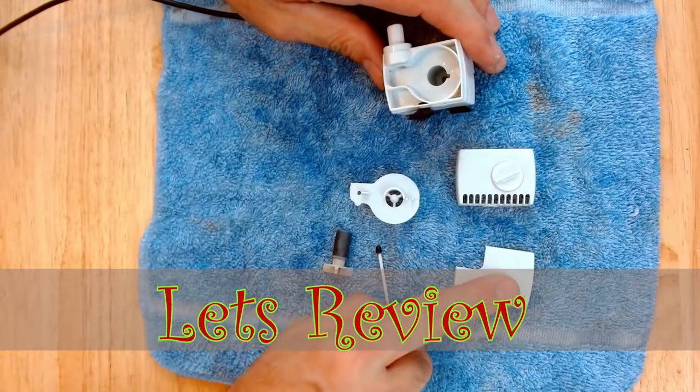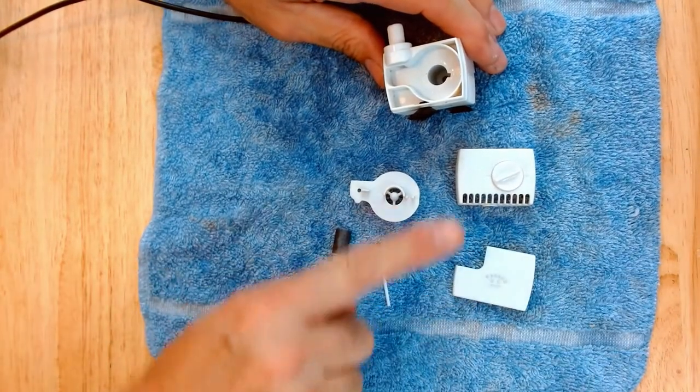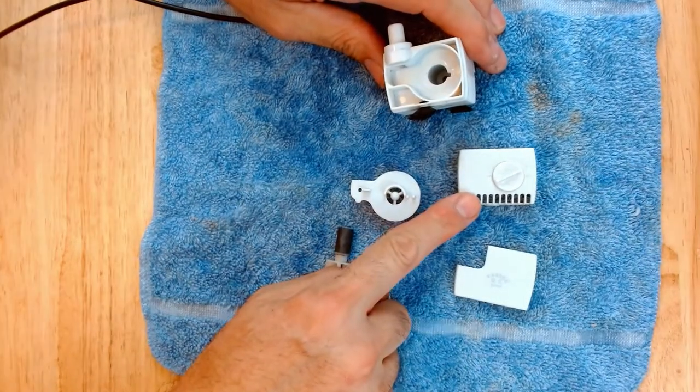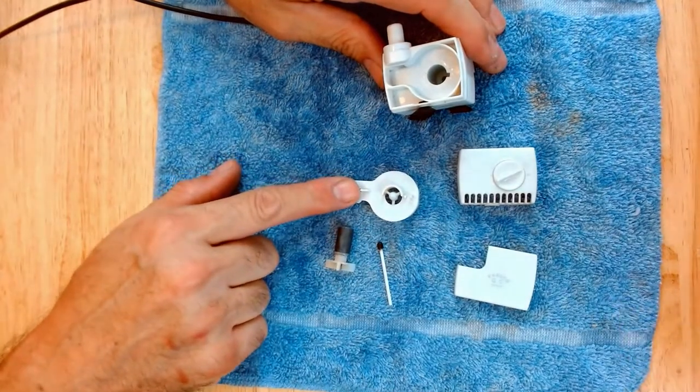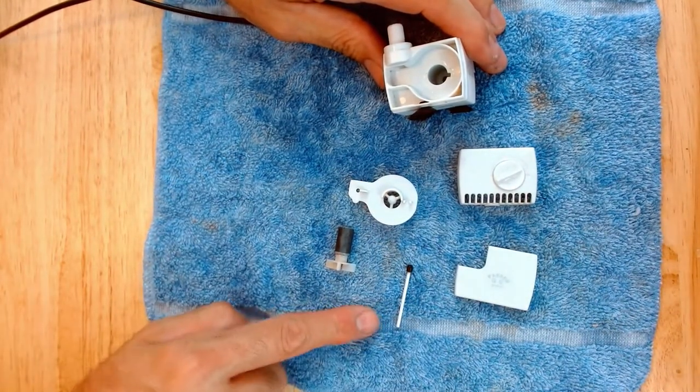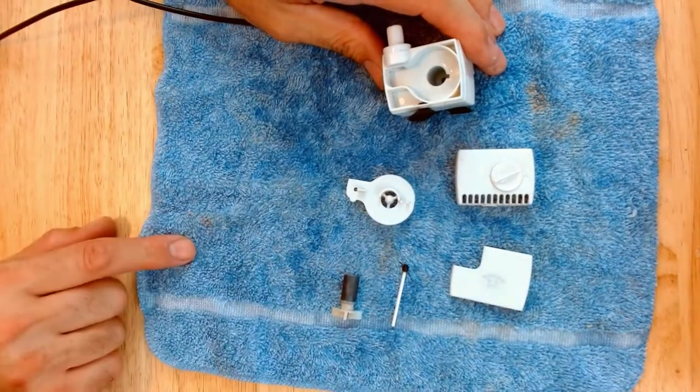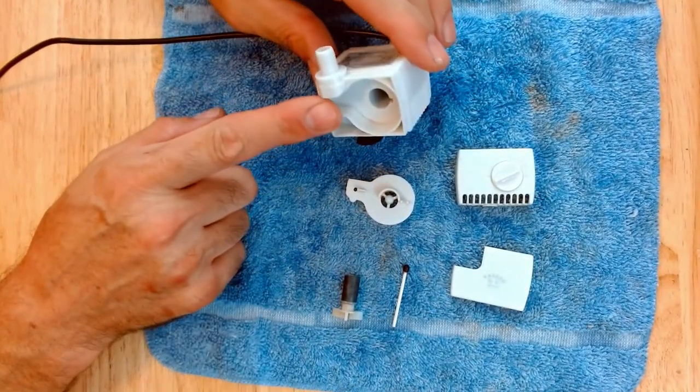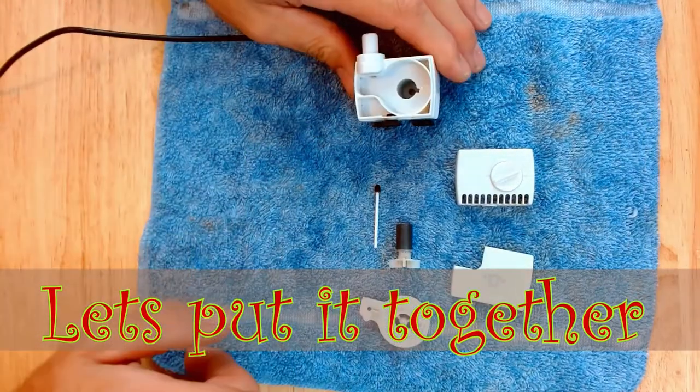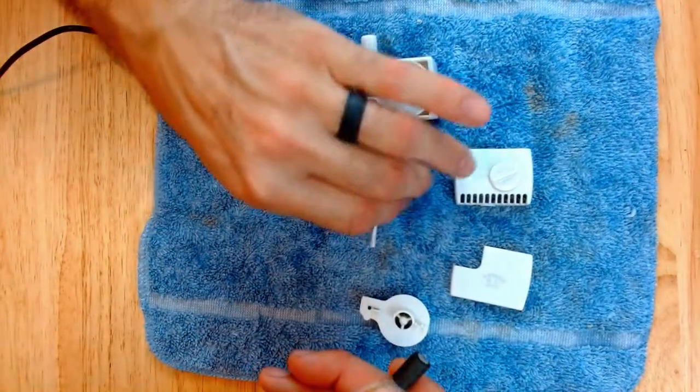So we have your back cover. Back cover. Front cover. Front cover. Your volute. Volute. Your impeller rod. Impeller rod. And your peller. And your impeller. And your pump. Pump. First thing you do is your impeller and your impeller rod.